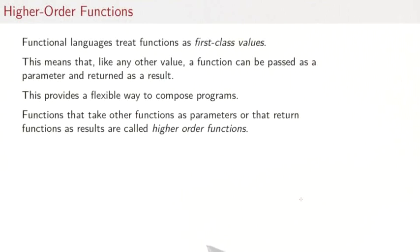In this session we are going to cover an important concept in functional programming. Higher order functions let you pass functions as arguments and return them as results. One thing particular about functional languages is that they treat functions as first class values. This means that, like any other value, a function can be passed as a parameter to another function or returned as a result. This provides a flexible way to compose programs.